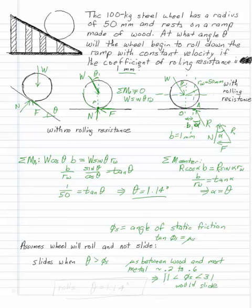Now, we found that it would roll at theta equals 1.14 degrees, which is much less than phi s, so the wheel will roll before it slides.